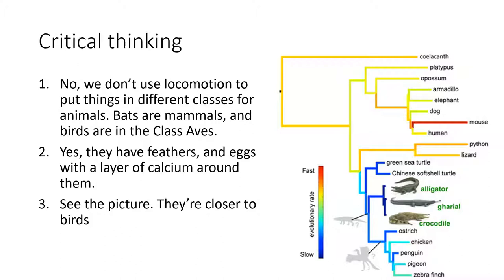Ostriches and penguins don't fly — should they be in class Aves? They still have feathers, and from a DNA standpoint they are more related to birds than to any other group, so yes. Is a crocodile more closely related to a bird or a lizard? Looking at the phylogenetic tree: the branch point between crocodilians and birds is much more recent than the branch point leading to lizards and snakes. So crocodiles are actually more closely related to birds than to lizards.